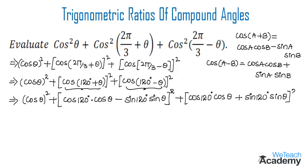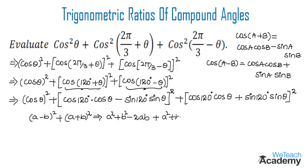This is in the form of (a − b)² + (a + b)², which expands to a² + b² − 2ab + a² + b² + 2ab. The ±2ab terms cancel, giving 2(a² + b²).